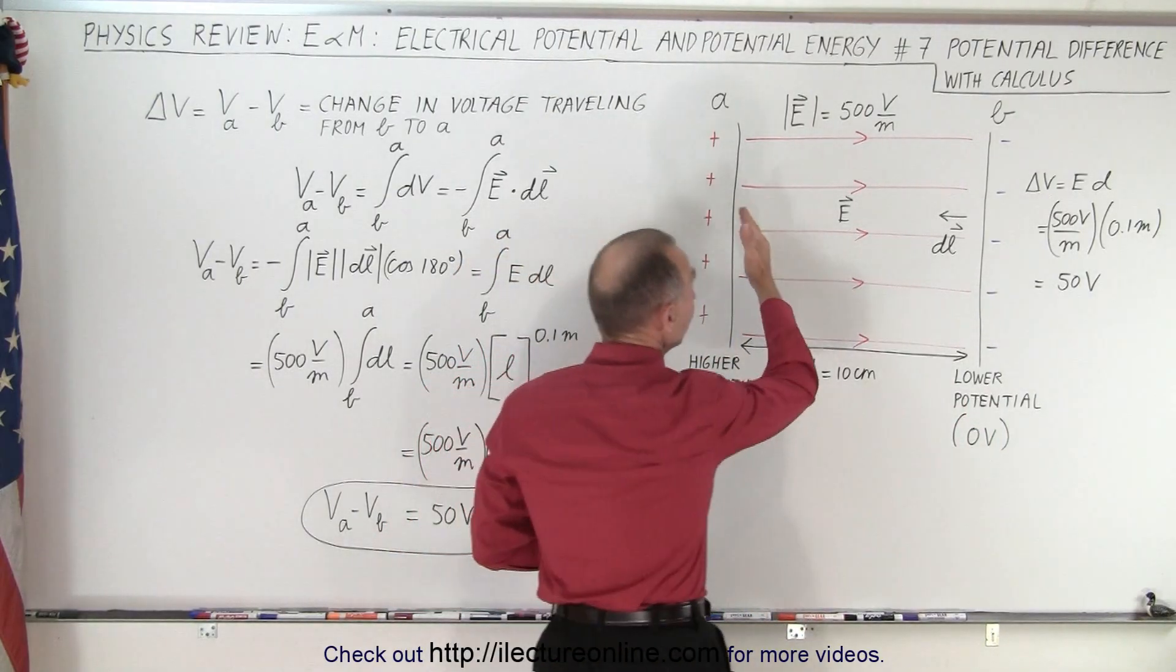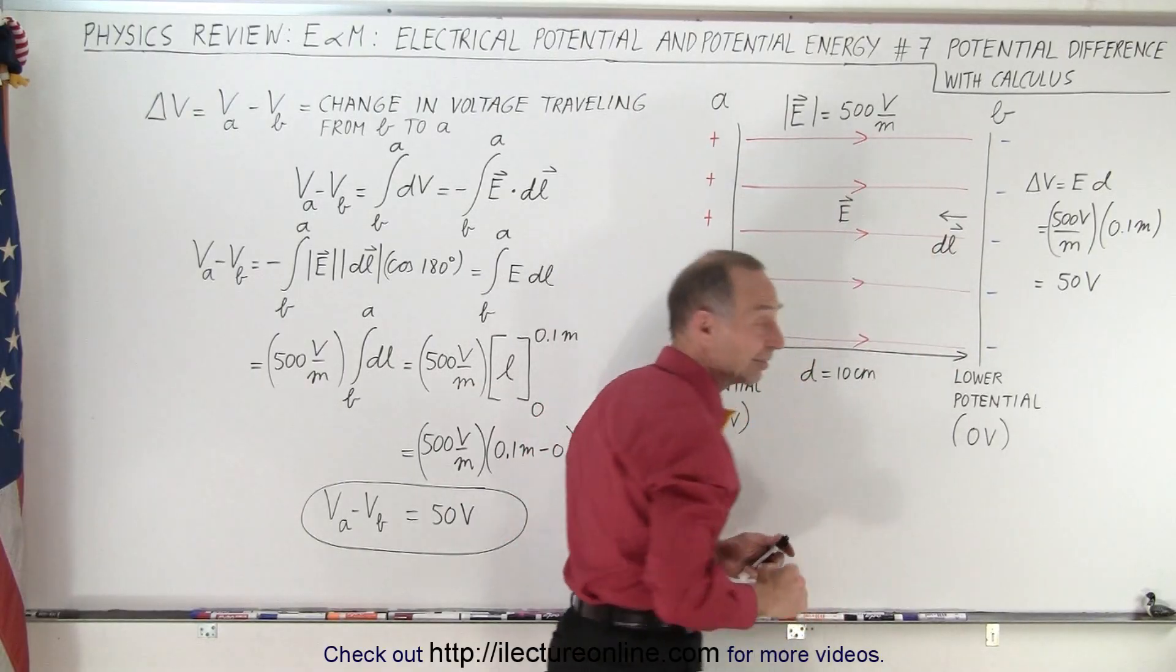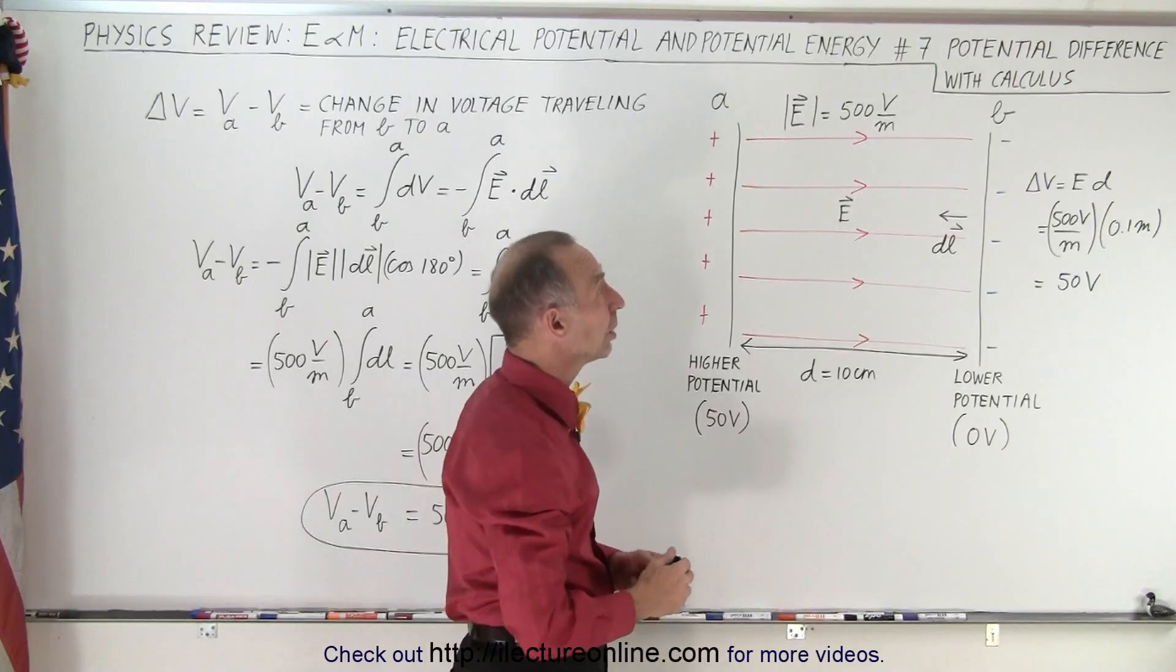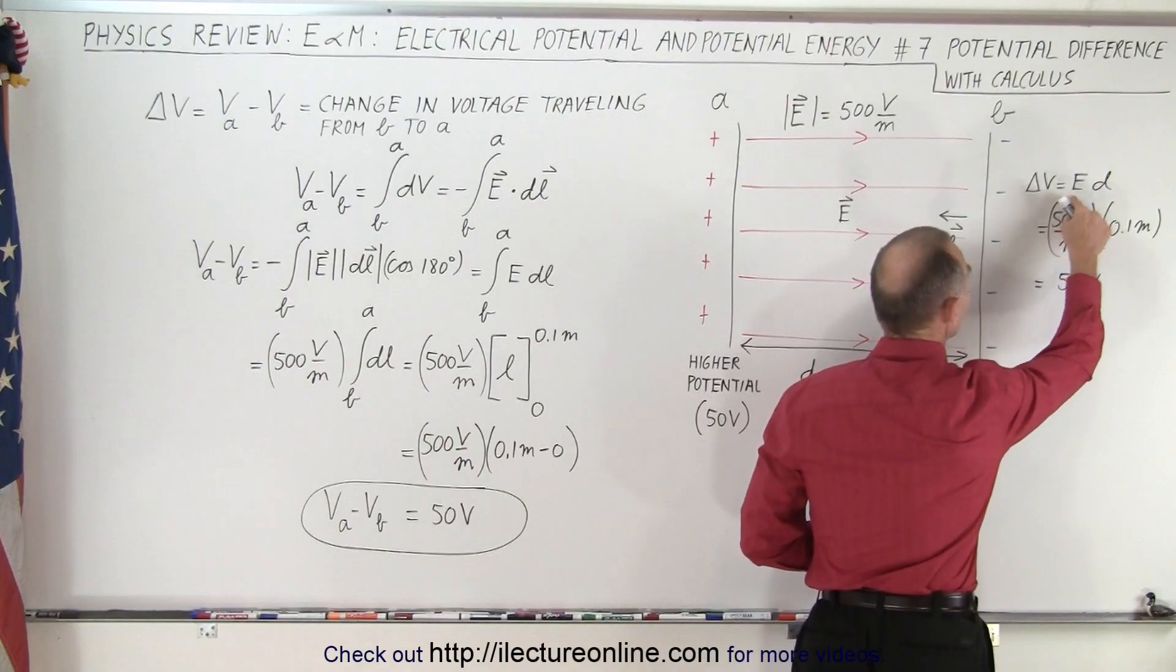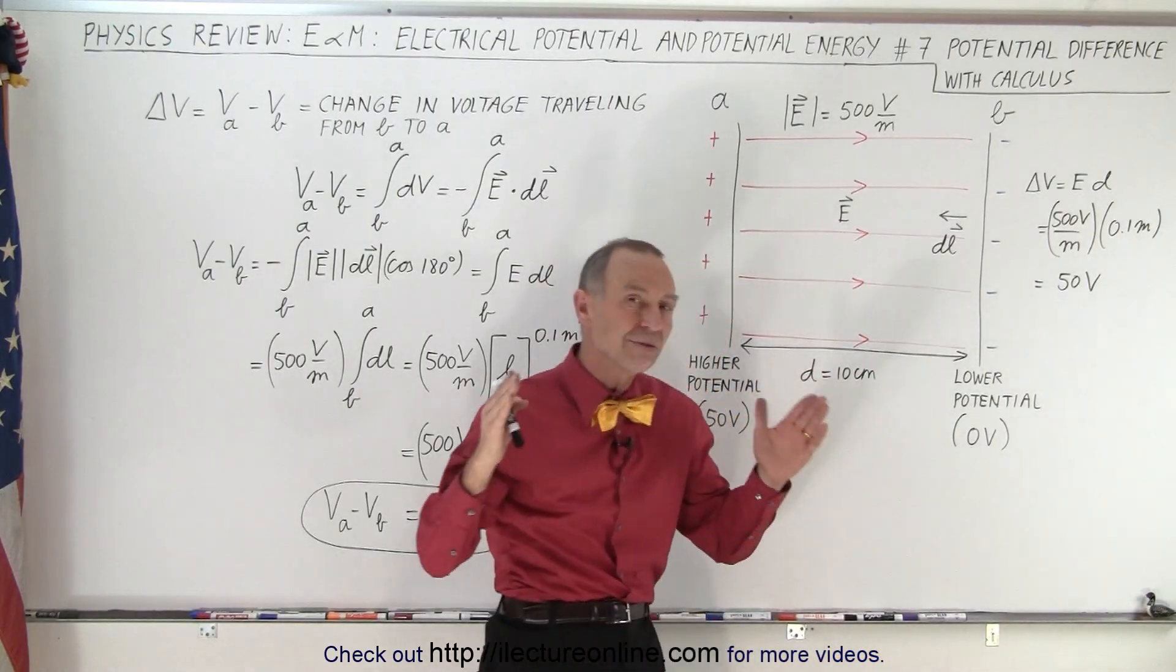And since the electric field strength between the plates is 500 volts per meter and the distance between the plates is 10 centimeters in this example, then all we have to do is multiply the strength of the electric field times the distance to get the potential difference. The difference is 50 volts.